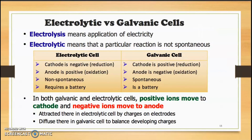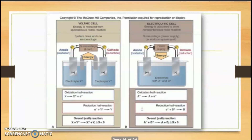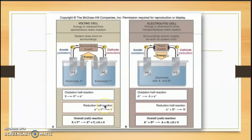Electrolytic cells versus galvanic cells: electrolytic cells are non-spontaneous, whereas galvanic cells are spontaneous. In both galvanic and electrolytic cells, positive ions move to the cathode and negative ions move to the anode.